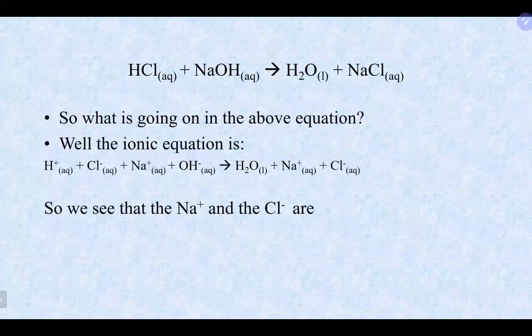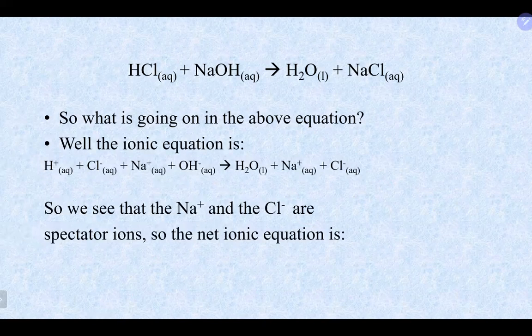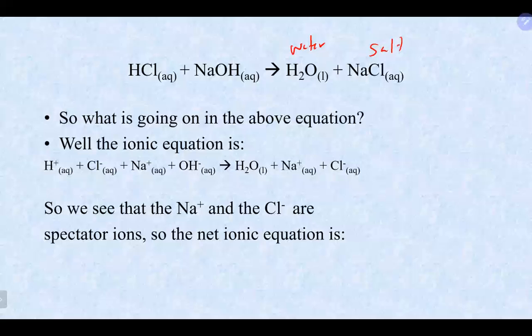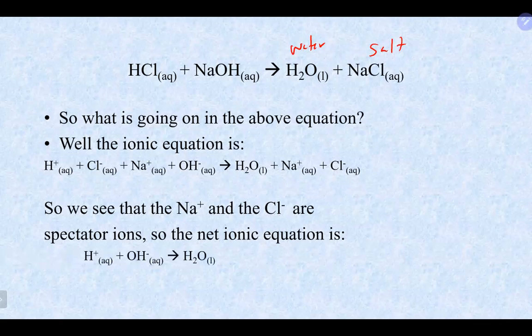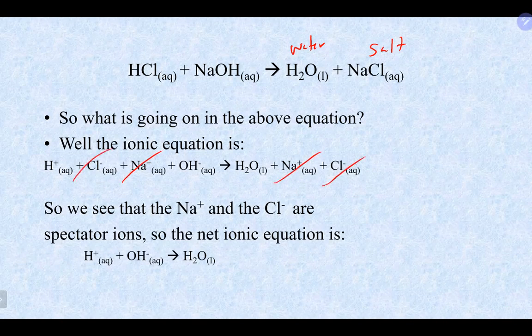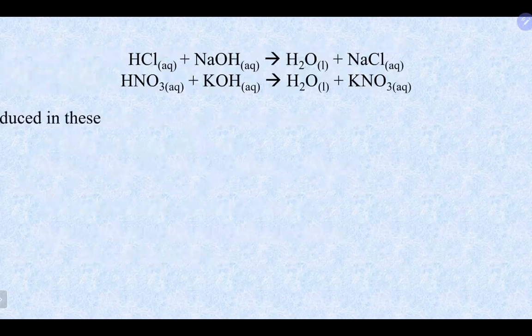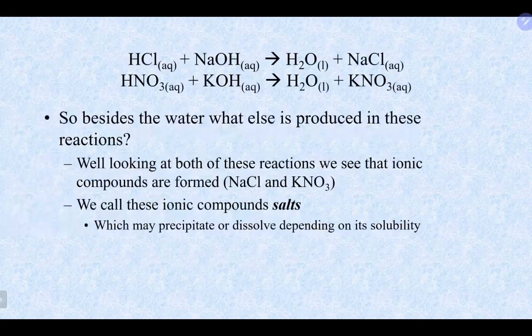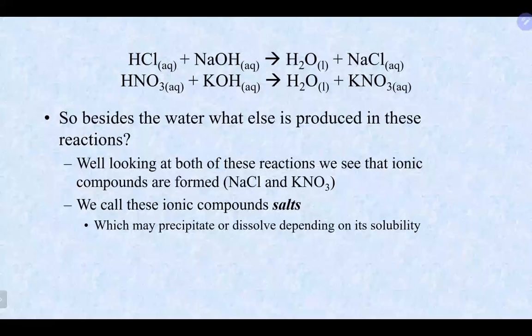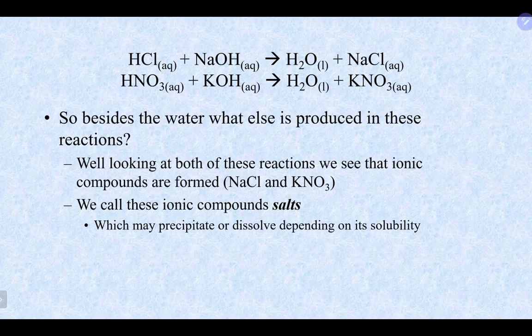For sodium hydroxide and hydrochloric acid, again you make water and a salt. You can see sodium and chloride are the spectator ions. Ultimately, the acid provides H+ and the base provides OH- to form water. In most cases, the salts formed based on solubility rules will be soluble — group 1 elements are soluble, so the salt breaks apart and floats in solution. Acid-base reactions still fall under the double displacement umbrella.